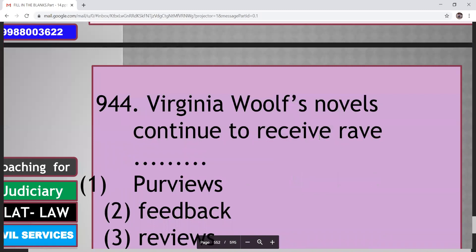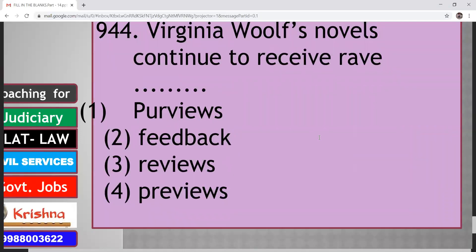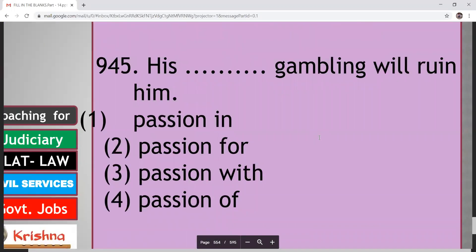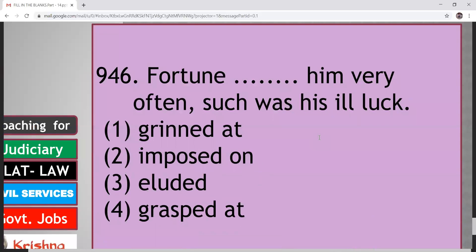Virginia Woolf's novels continue to receive rave dash. Reviews, feedback, purviews. So here it is your third option. Reviews. His dashed gambling will ruin him. Passion in, passion for, passion with, passion of. So here answer is passion for. His passion for gambling will ruin him. Next. Fortune dashed him very often. Such was his ill luck. Elude means not achieve. Fail to be attained by someone. So fortune eluded him very often.